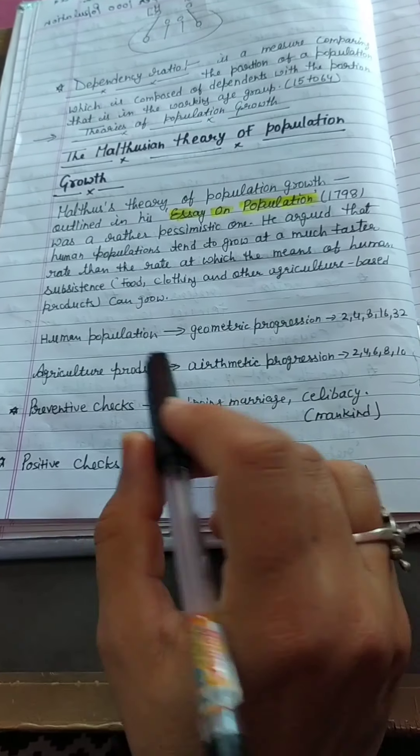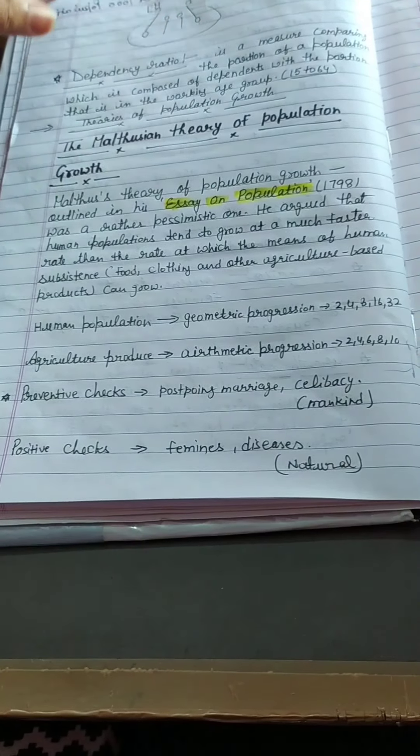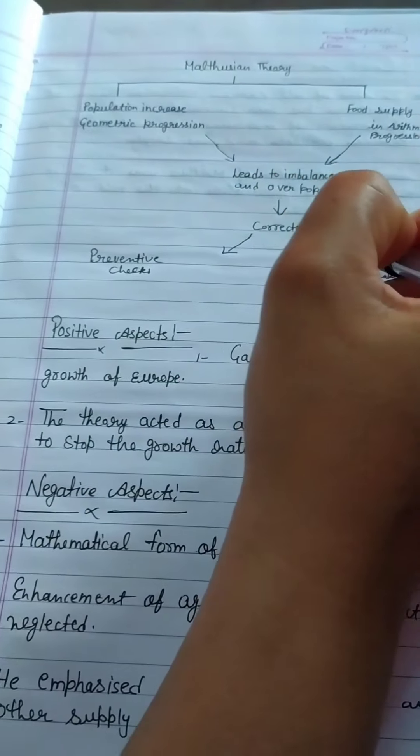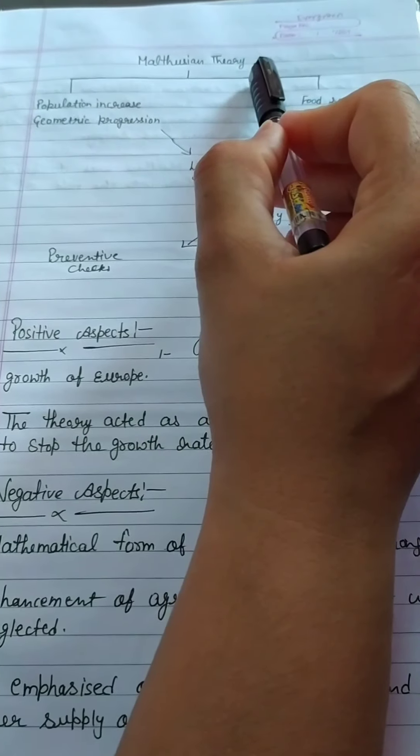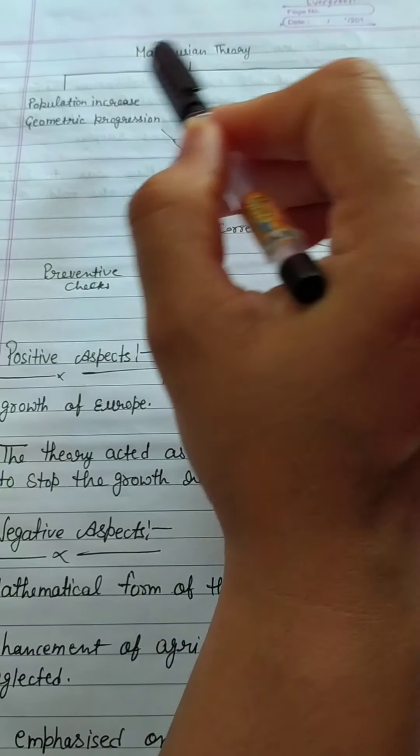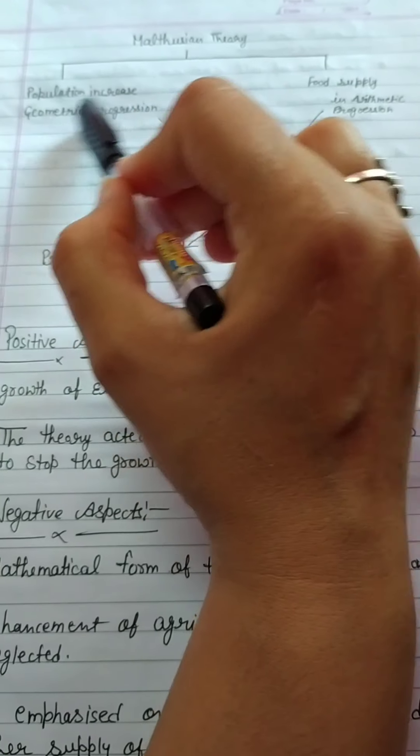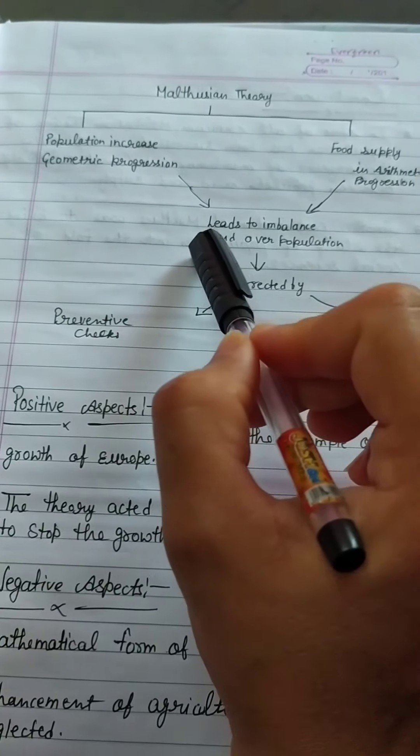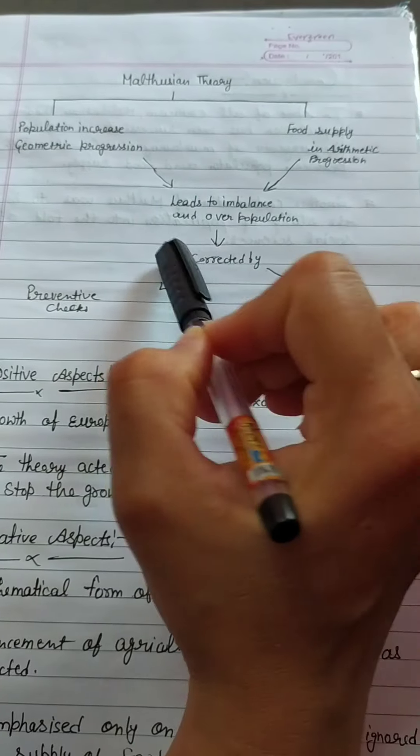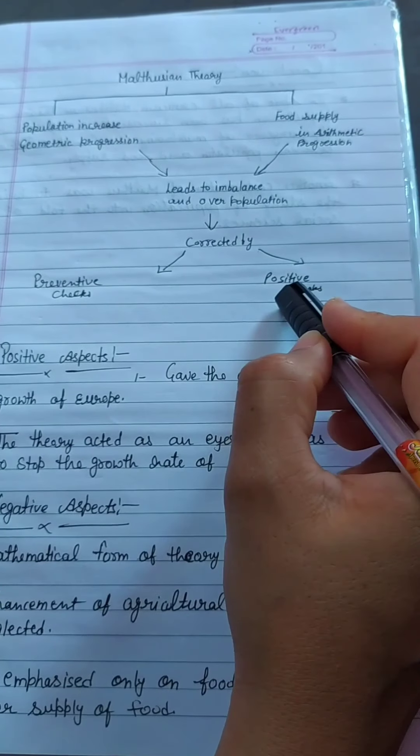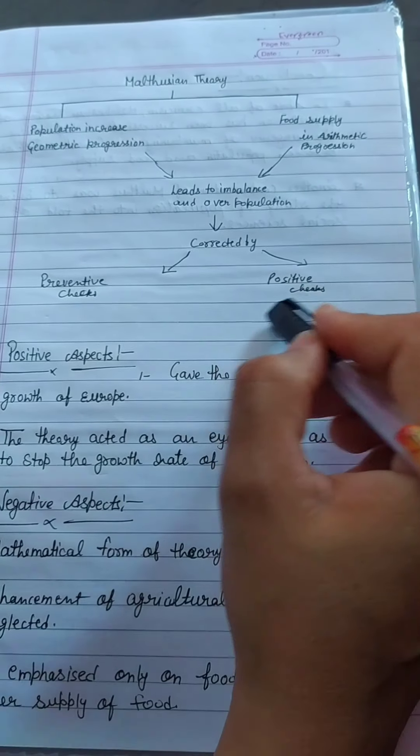Population increase leads to imbalance and overpopulation, which leads to preventive checks like late marriage and celibacy, and positive checks like disease or earthquake or any natural disaster.